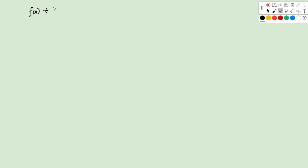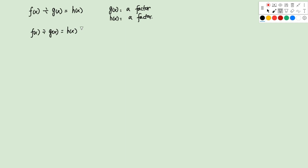Let's briefly review what we learned in the previous lecture. Given two polynomials f and g, when f divides g, we get another polynomial h without remainder. We call g a factor of f, and h is also a factor. If f divides g and we get polynomial h with a remainder r, the degree of r is smaller than the degree of g, so g is not a factor, and r is called the remainder of f divided by g.